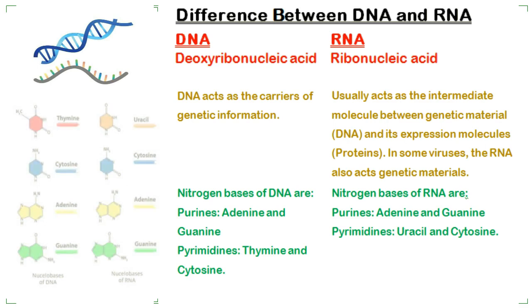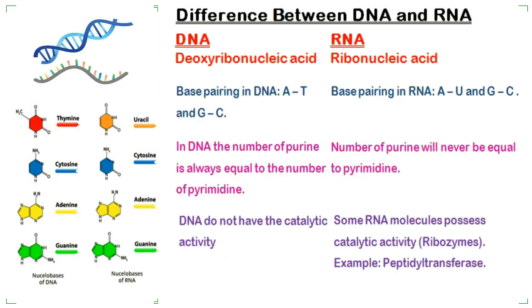The nitrogen bases of DNA are adenine, guanine, thymine, and cytosine. While the nitrogen bases of RNA are adenine, guanine, uracil, and cytosine. Base pairing in DNA is adenine-thymine and guanine-cytosine, while base pairing in RNA is adenine-uracil and guanine-cytosine.